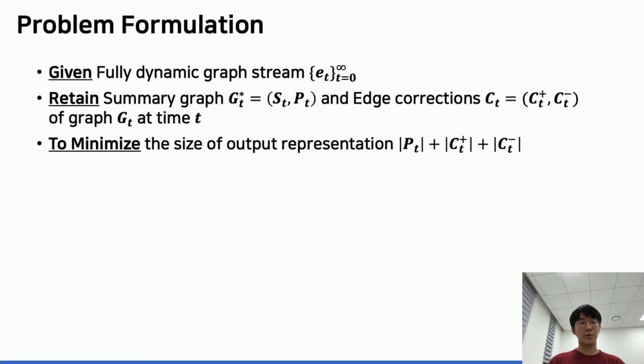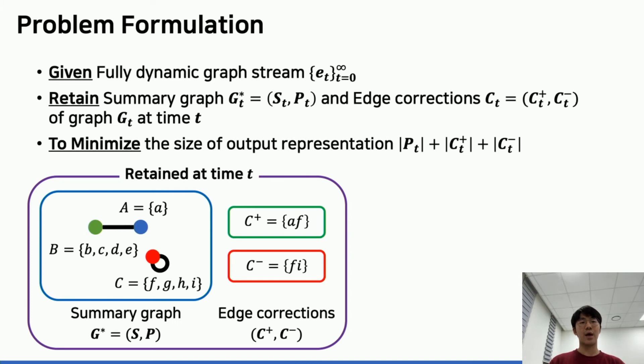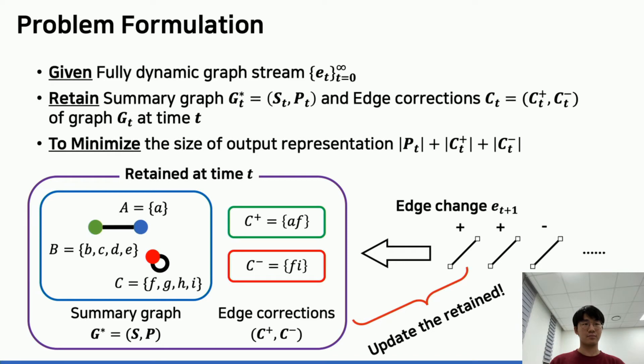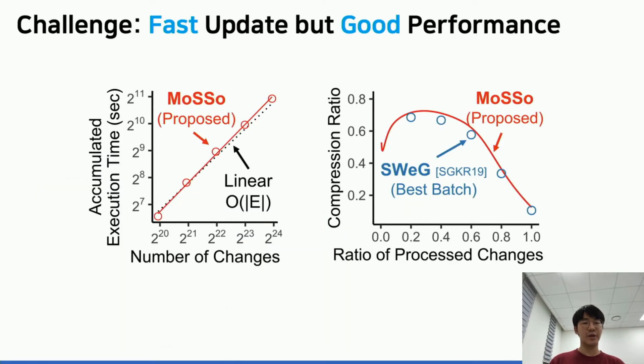Now let's formulate the problem. When you are given a fully dynamic graph stream, at every single moment, we want to retain a summary graph and edge corrections of the graph at time t while minimizing the size of the output representation. When an edge change arrives, we want to update the output representation while minimizing the description cost. It is desirable to have fast update time while maintaining good performance compared to state-of-the-art batch algorithms.